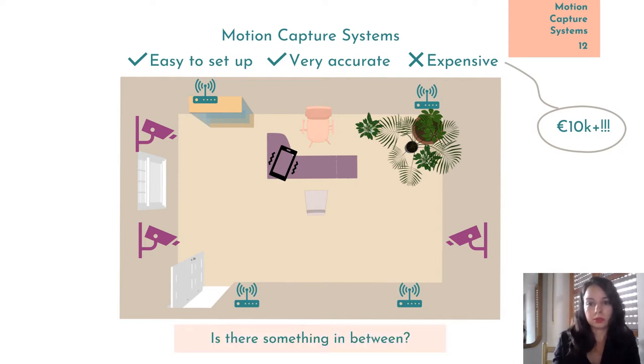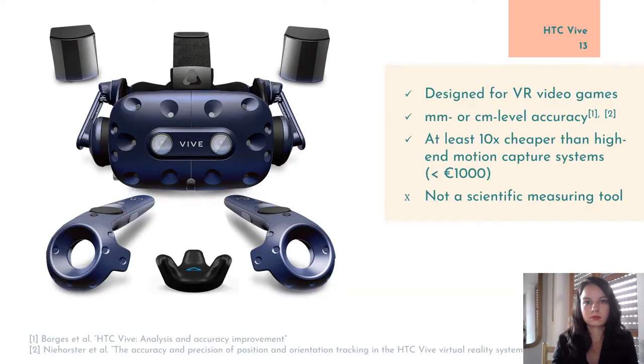So, is there something in between that we can use? One option is to use a consumer-grade motion capture system, like the HTC Vive, which was designed for virtual reality video games. It can track the headset or other accessories with millimeter or centimeter level accuracy, and it is very easy to use.